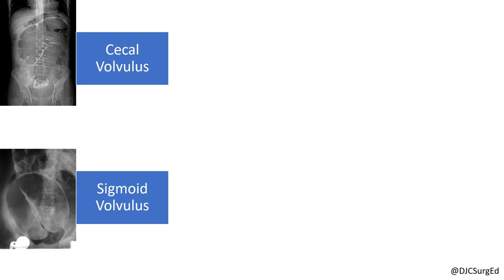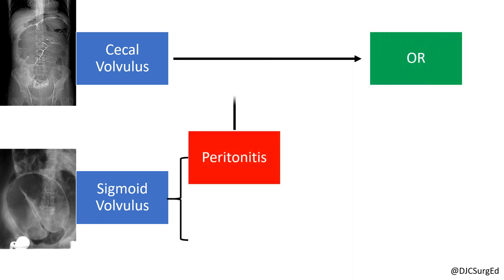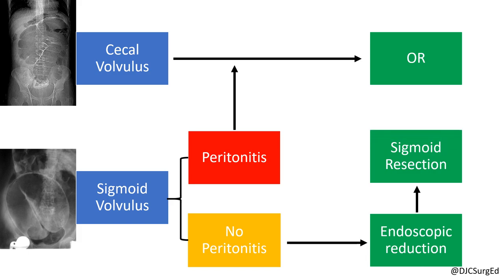For cecal volvulus, endoscopic decompression is not an option and patients should proceed to the OR for colonic resection. For sigmoid volvulus, patients who are unstable or exhibit peritonitis should also proceed to the OR. Stable patients can undergo endoscopic reduction and same-admission sigmoid resection.